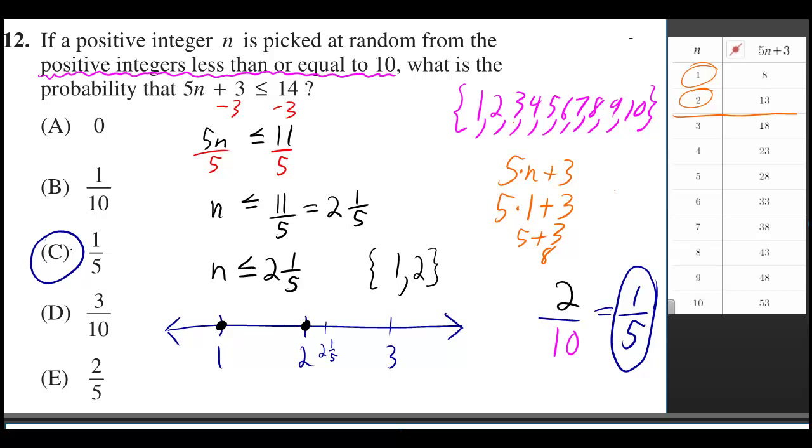So I'm only allowed to pick from 1, 2, 3, all the way up to 10. I made a graph here of 1, 2, and I also put 2 and 1/5, and I put 3 on there. Which one of those numbers are less than or equal to 2 and 1/5? Only 1 and 2.